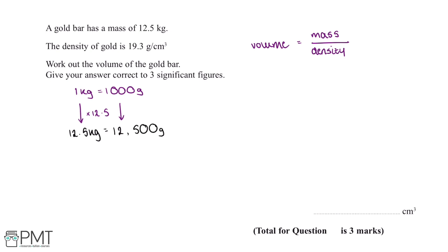Now we substitute the mass of the gold bar and the density of the gold into this equation. Our mass in grams is 12,500 and our density is 19.3. This gives us an answer of 647.67, and the units for our volume is centimeters cubed.